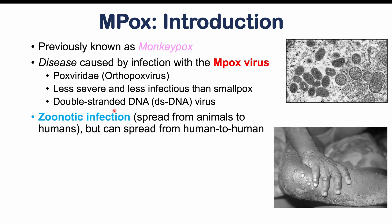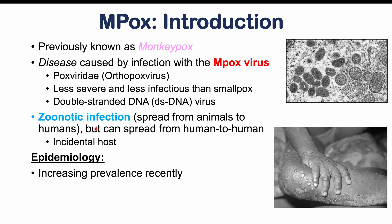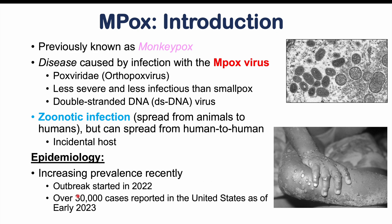M-pox is a zoonotic infection, meaning it is spread from animals to humans, but when it gets into the human population it can spread from human to human. However, humans are incidental hosts — not the hosts this virus is actually looking for. There has been increasing prevalence recently, with an outbreak starting in 2022, and as of early 2023 there have been over 30,000 cases reported in the United States.